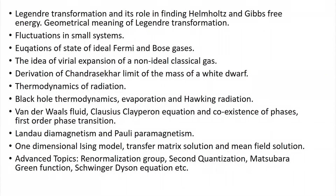Then I am going to go back to something more conventional and discuss a prototype of a non-ideal classical fluid — what is known as the Van der Waals fluid — which is basically a prototype for a first-order phase transition, namely a gas-to-liquid phase transition. I am going to show how the Clausius-Clapeyron equation allows you to map out the region of the phase diagram where liquid and gas coexist.